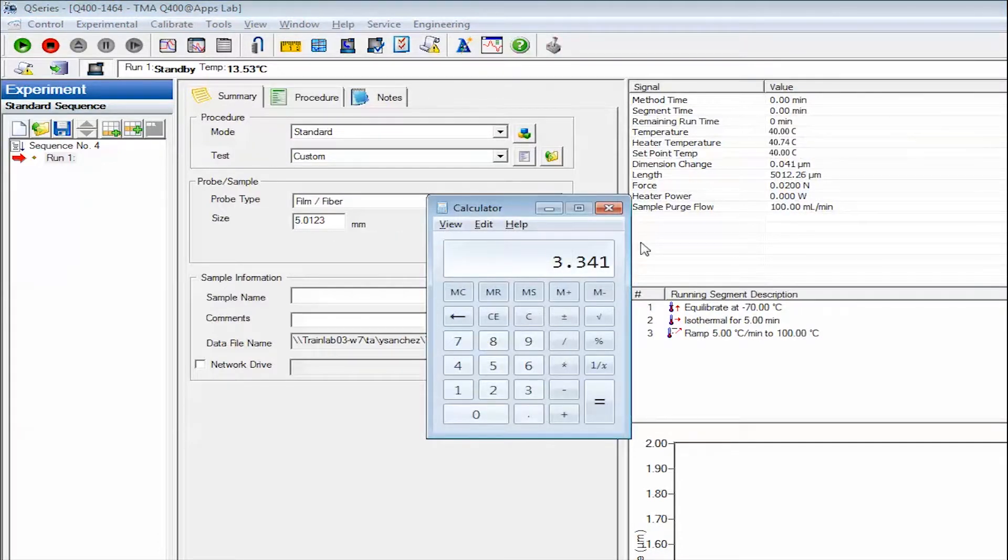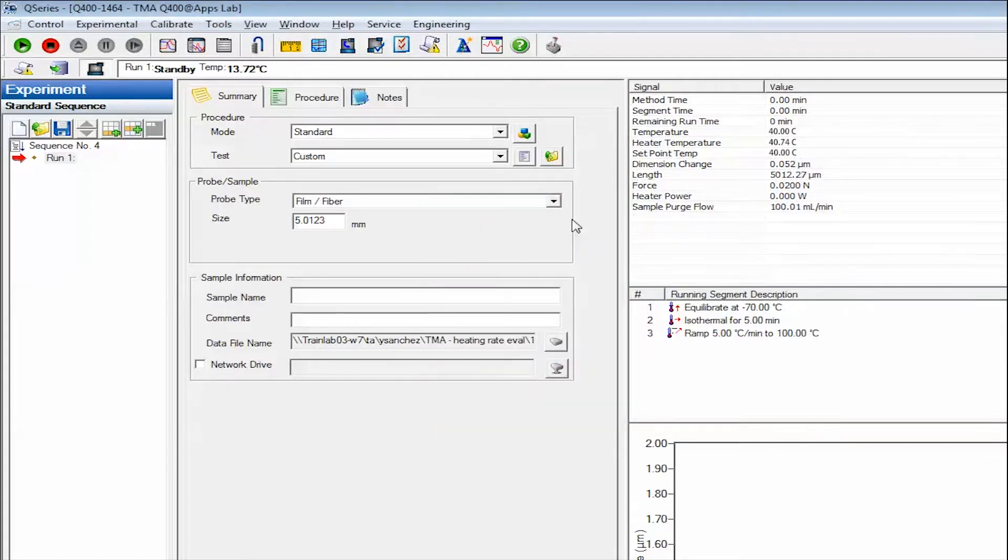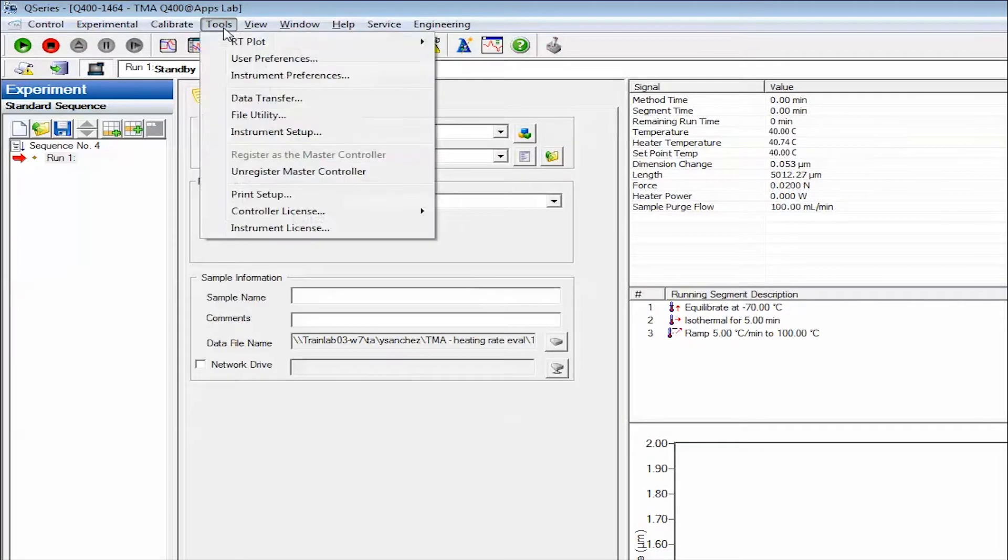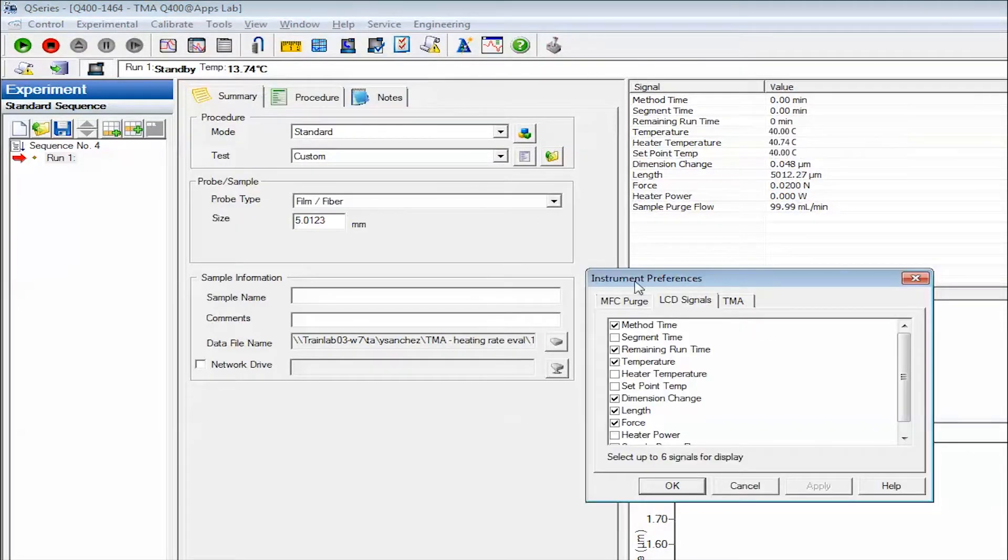Calculate the new offset by adding the old value plus the calibration fixture length, which is 5, and subtract the measured length. Enter the new AutoMeasure Offset value.